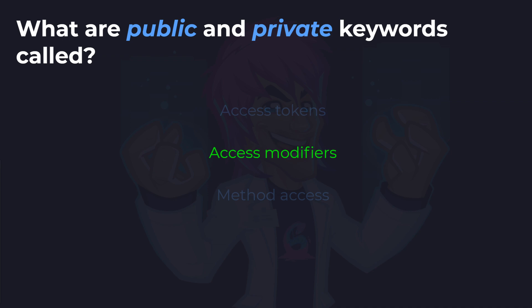Part of the method signature — the thing that makes up the method — begins with the access modifiers, which set the method's ability to be accessed by others. This is called the access modifiers. We covered this at the start of the lesson, so I hope you all got this one right.